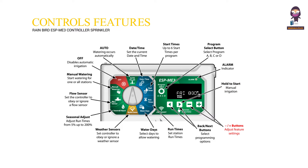Minus/plus buttons adjust feature settings. Back/next button selects programming options. Runtime: set station run times. Water days: select days to allow watering. Weather sensors: set the controller to obey or ignore a weather sensor. Seasonal adjust: adjust run times from 5% up to 200%. Flow sensor: set the controller to obey or ignore a flow sensor. Manual watering: start watering for one or all stations. OFF disables automatic irrigation.